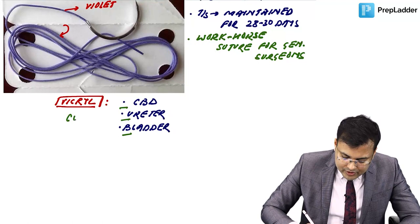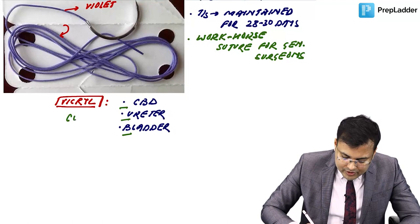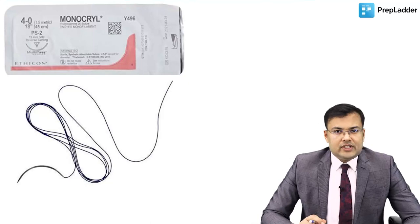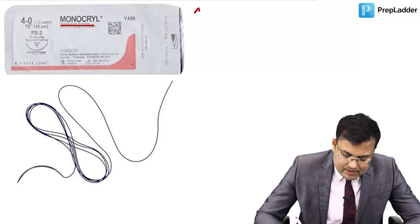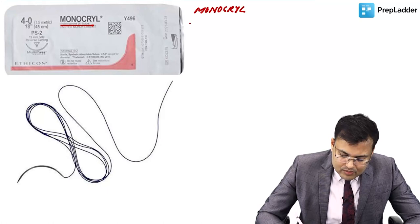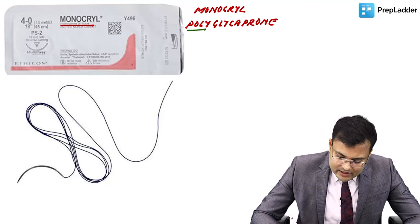Monocryl, also known as polyglycaprone, is a copolymer of glycolide and caprolactone. It was asked as an image-based question in AIIMS. The key facts: monocryl is used for subcuticular suturing and is absorbed in 90 to 120 days.